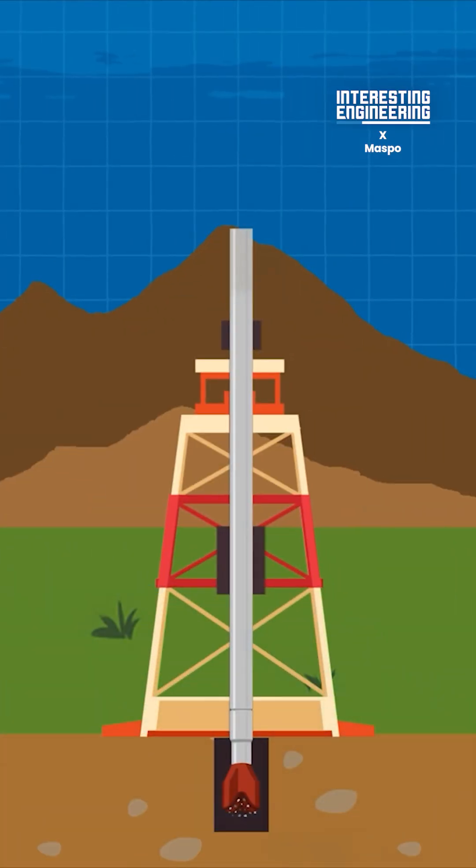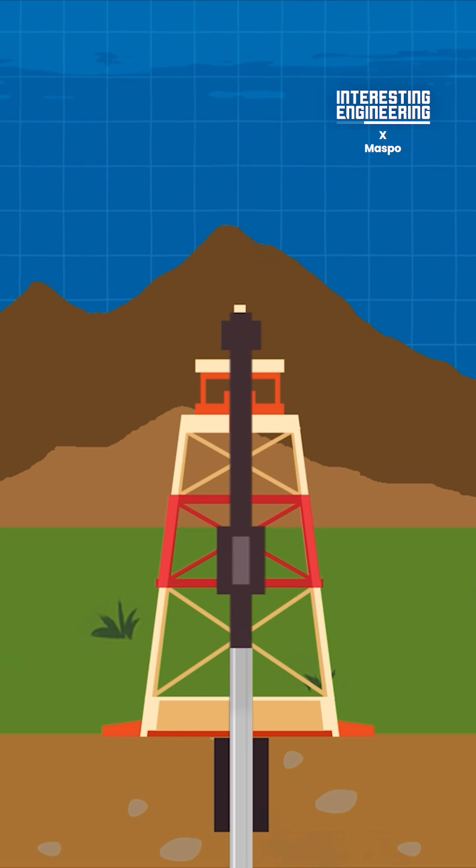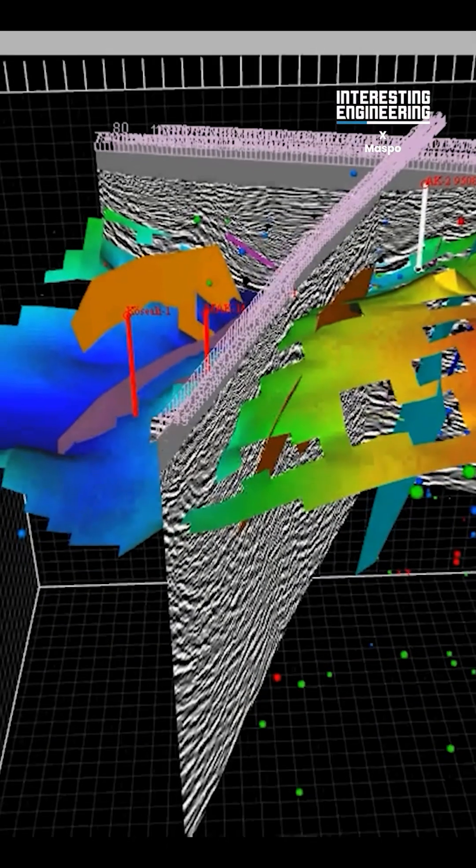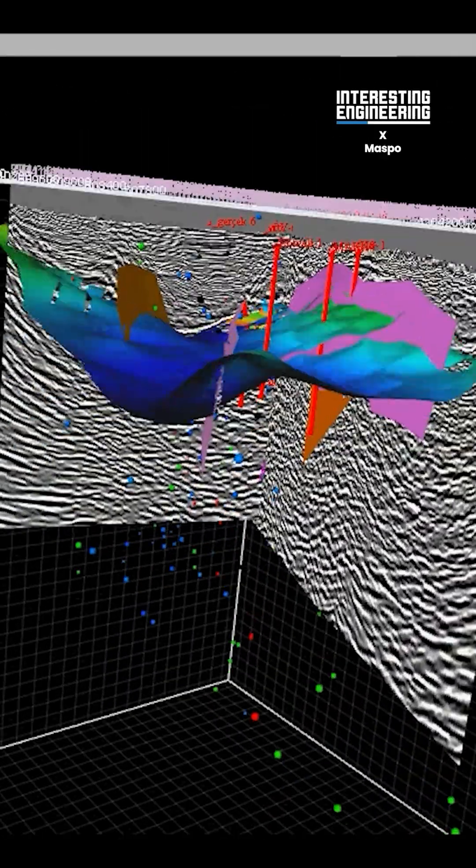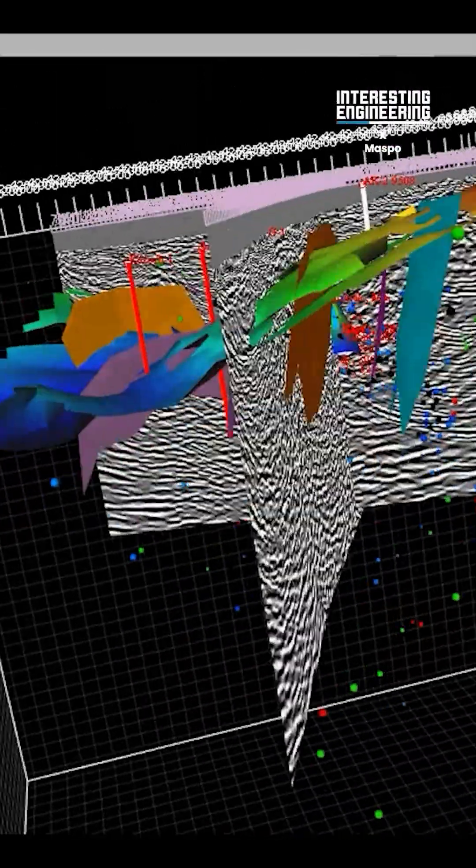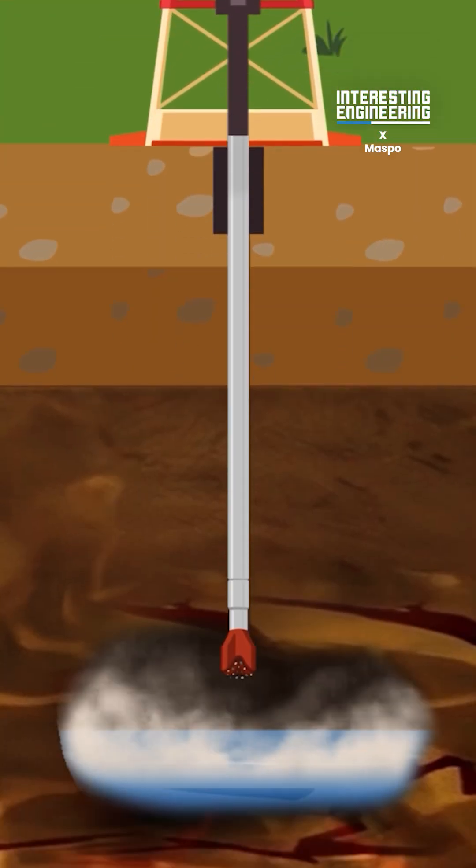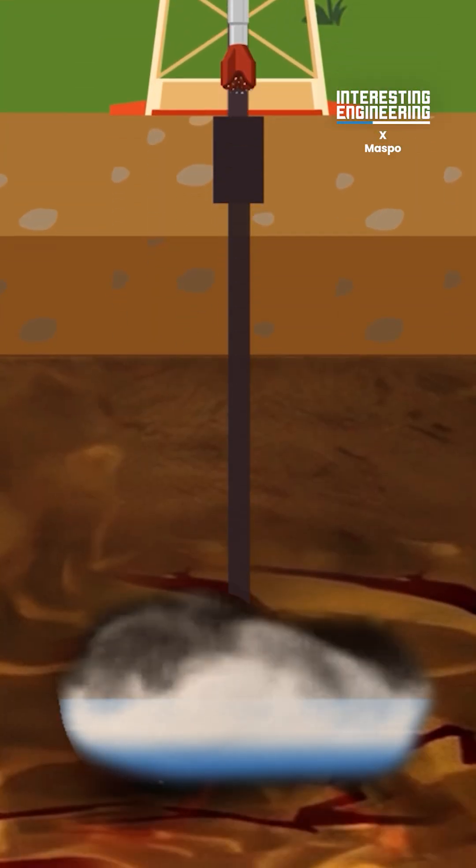It all starts with the production well. This is the passage drilled into the Earth's crust to reach the hot geothermal fluid underneath. A ground survey allows people to discover where wells can be drilled and plan accordingly. The well is drilled to a depth of 3,000 meters, which takes an average of 35 days.